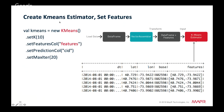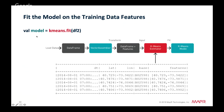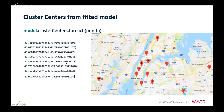Next we create the k-means estimator to train and produce the model. We set the number of clusters, the features column, the column name for the returned cluster center prediction, and the number of iterations. We then call k-means fit on the estimator with the DataFrame containing the feature vector, which returns the k-means model.